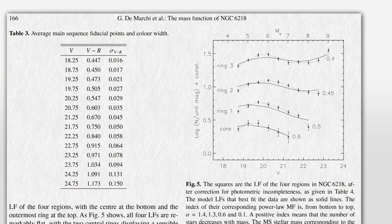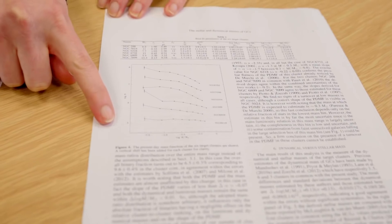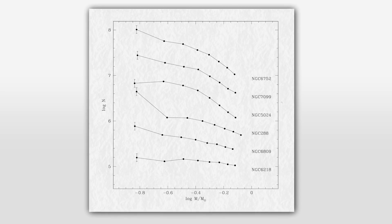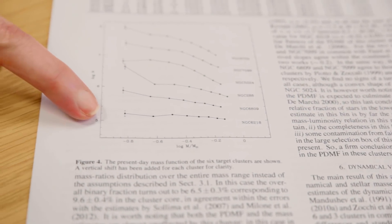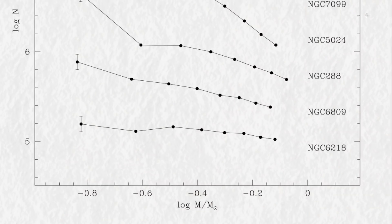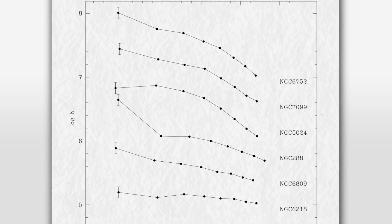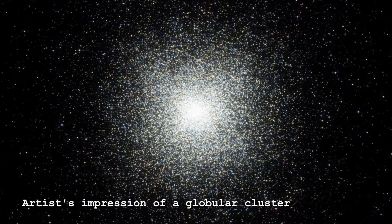Here's where the mystery comes into play. Viewers might not appreciate what the flat nature of that mass function means, but let me put it into context by showing some different mass functions from other clusters. We've got mass and number, staggered vertically so we can see the difference. Our friend NGC 6218 is here at the bottom, and you can see how flat it is compared to the other clusters. In simple terms, it means that for every high-mass star, you have the same number of low-mass stars — and that is a bit of a mystery considering what we think we know about how globular clusters form and how stars evolve.